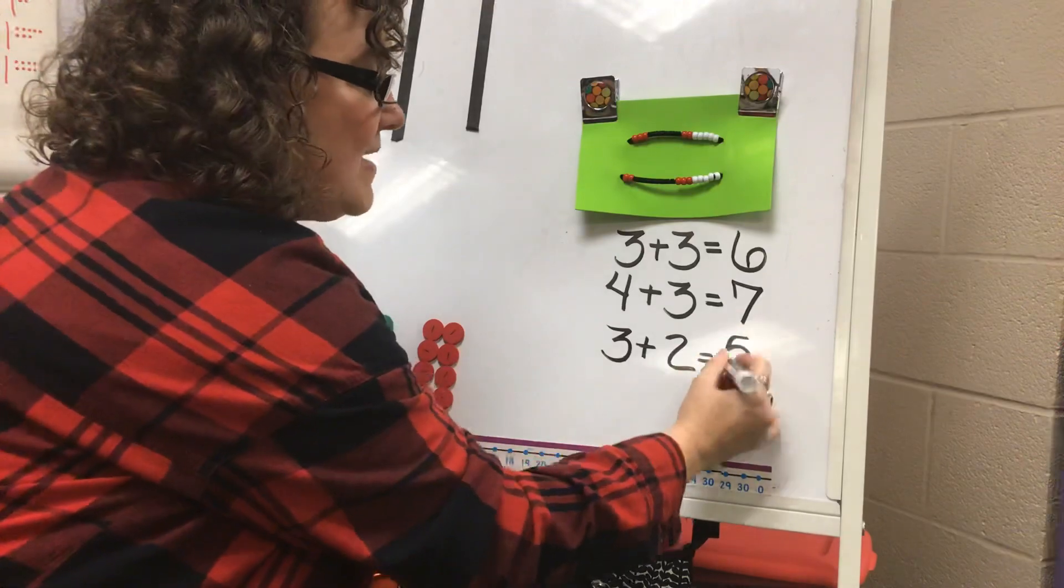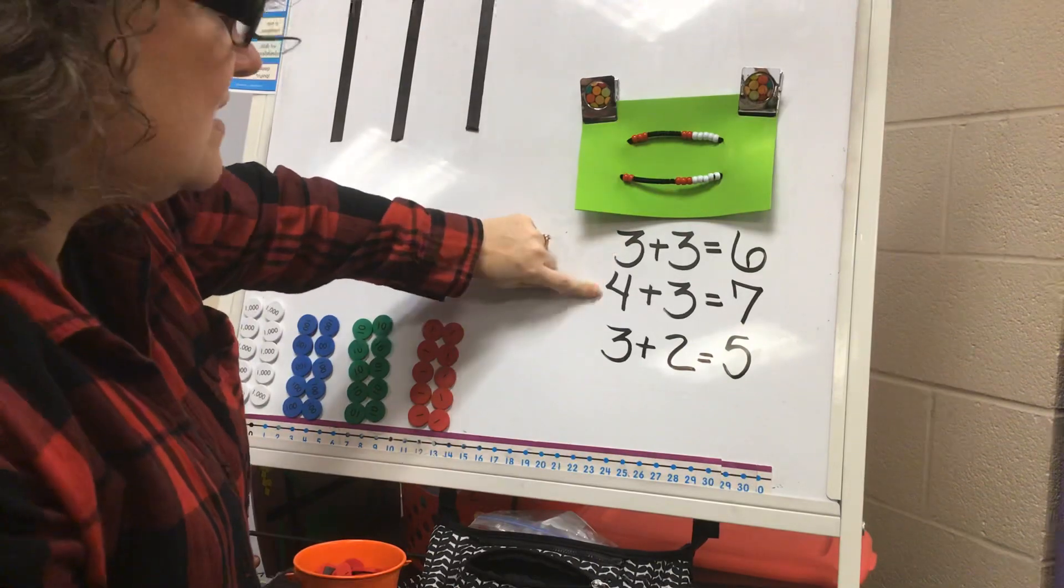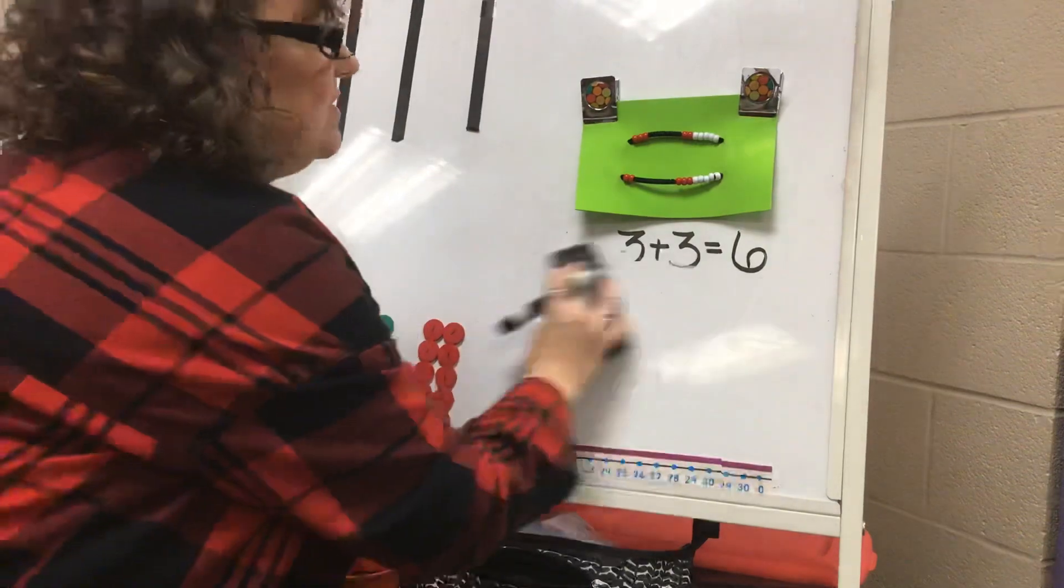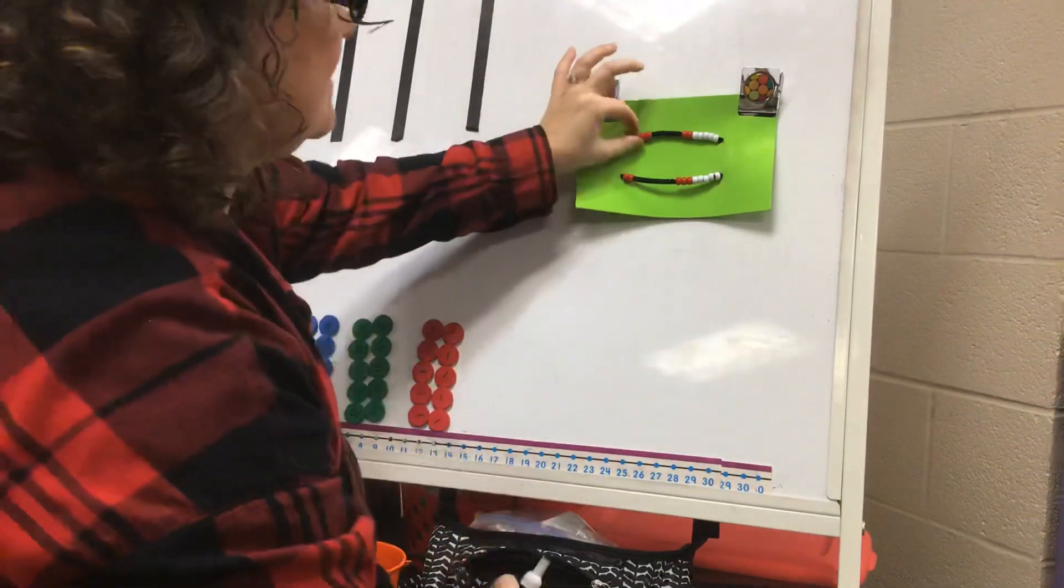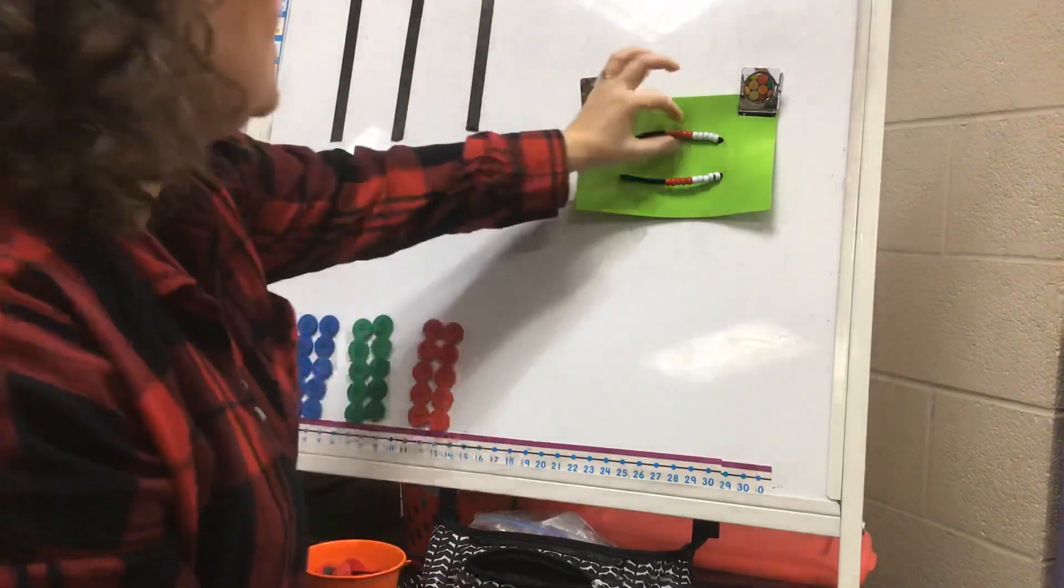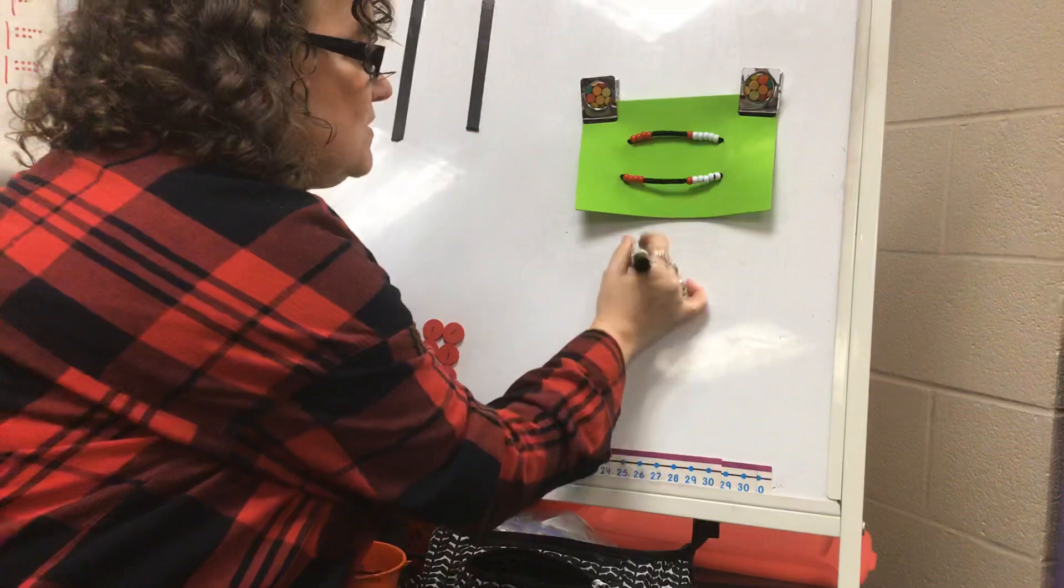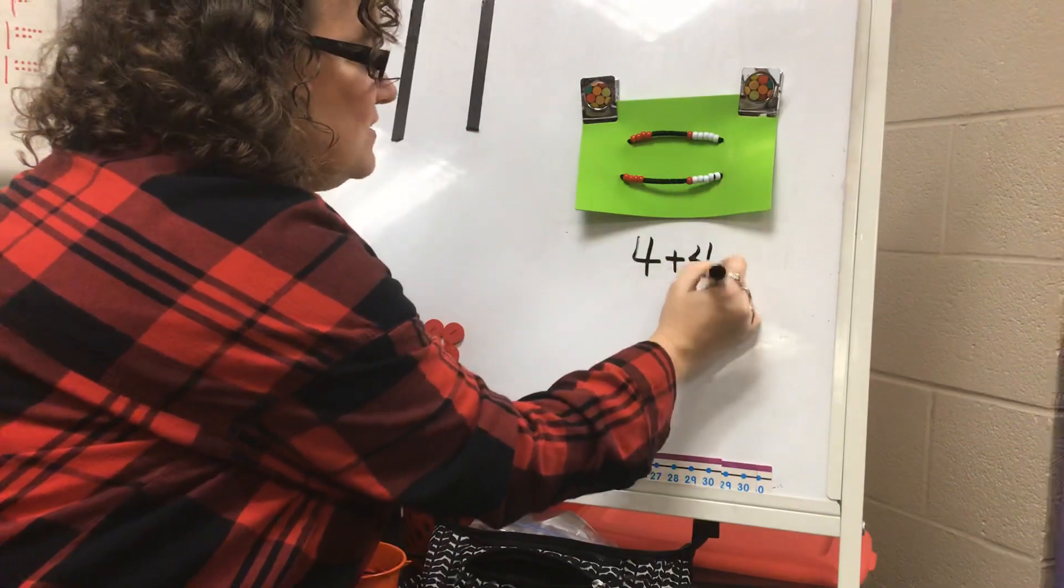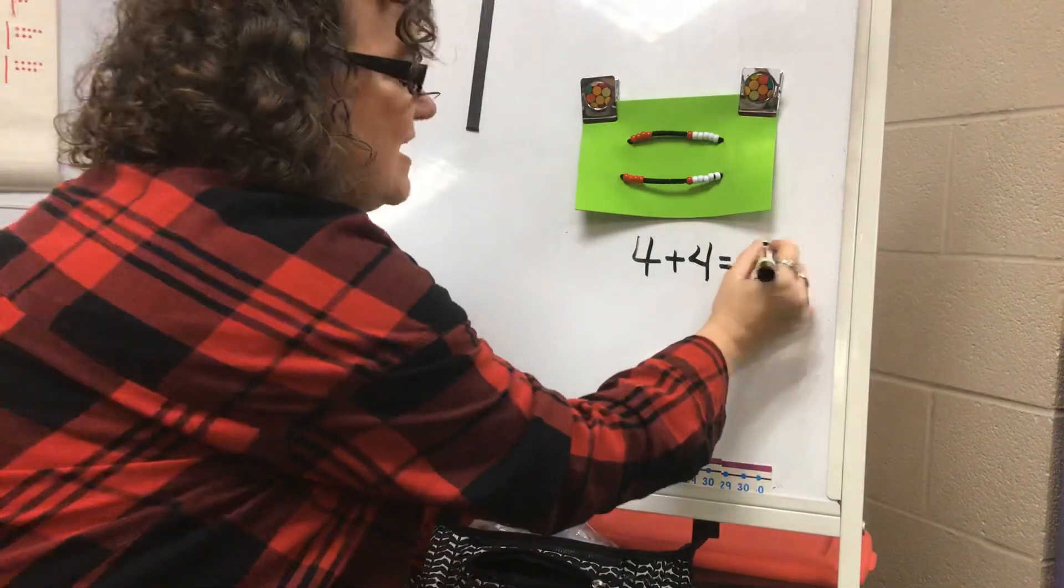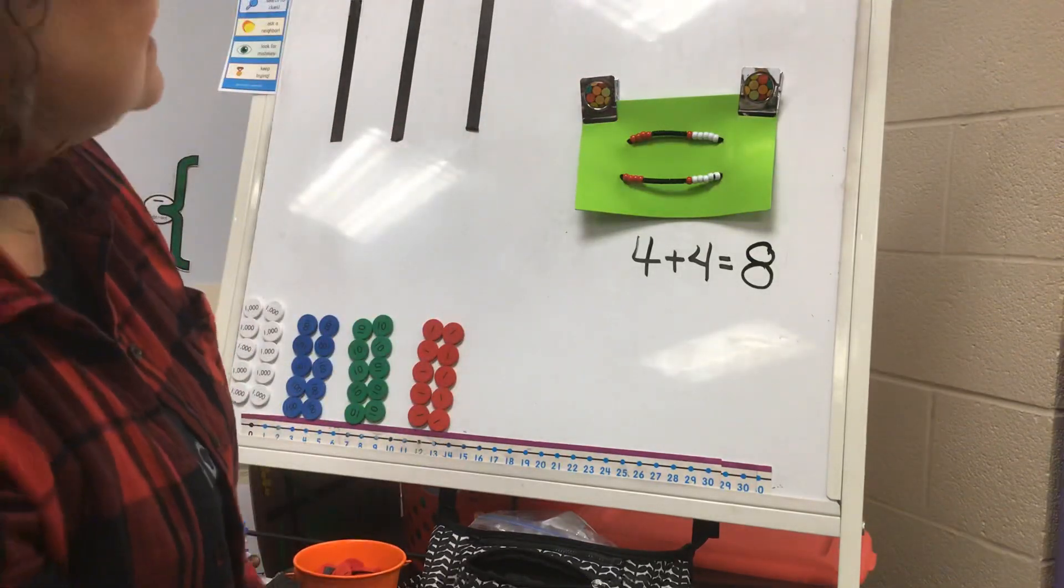So if we know our doubles fact for three plus three, then we can also do our near doubles facts. That works with lots of numbers. Let's do another doubles fact so you can practice it. I'm gonna slide my beads back over and I'm gonna start over with four plus four. Do you know your doubles for four plus four? Did you say eight?